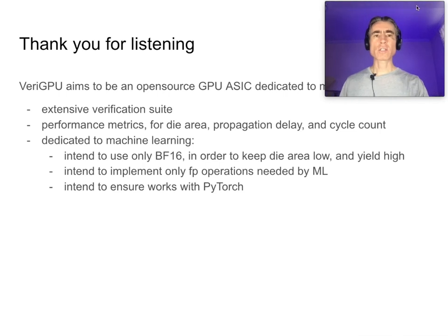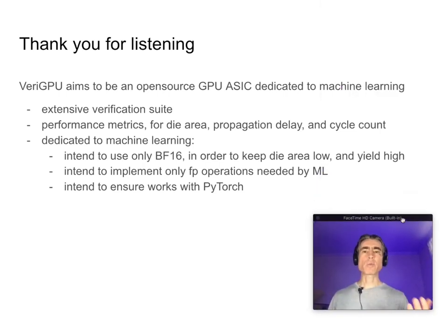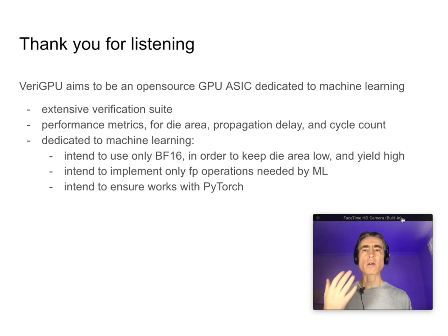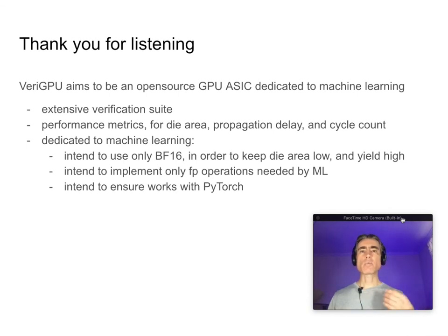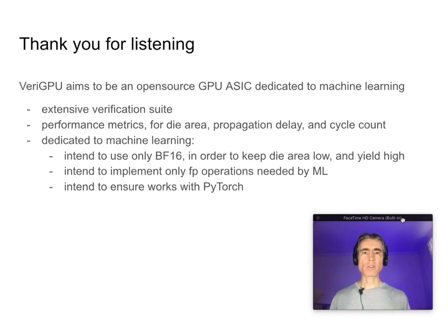Thank you for listening. VariGPU aims to be an open source GPU ASIC dedicated to machine learning. It has an extensive verification suite — unit tests, integration tests, etc. We're calculating performance metrics for die area, propagation delay, and cycle count. It's dedicated to machine learning: we intend to use only BrainFloat 16 to keep die area low and yield high, implement only floating-point operations needed by ML, and ensure it works with PyTorch.